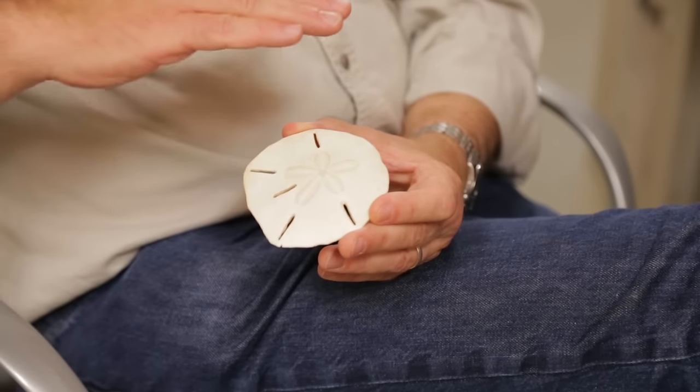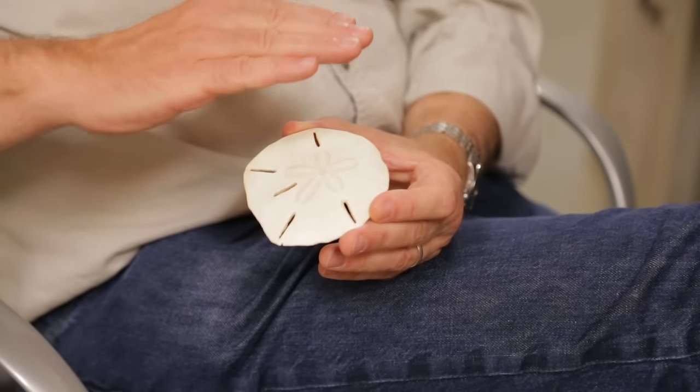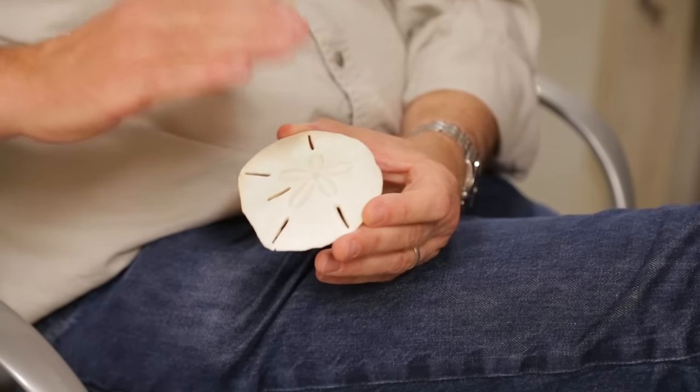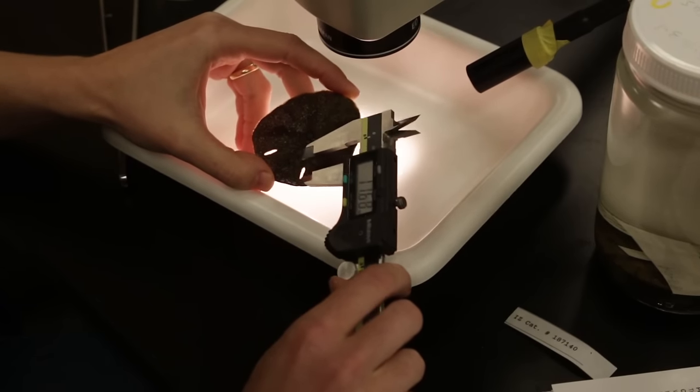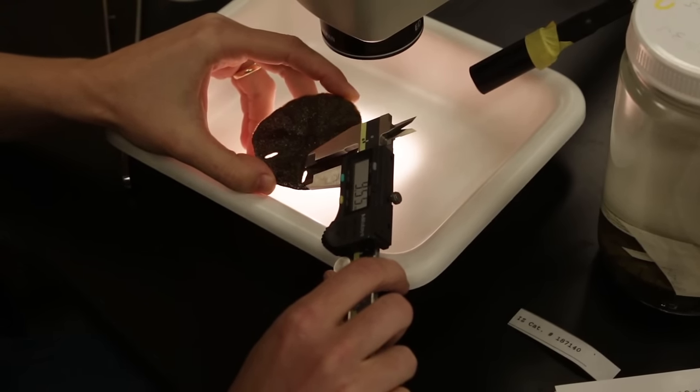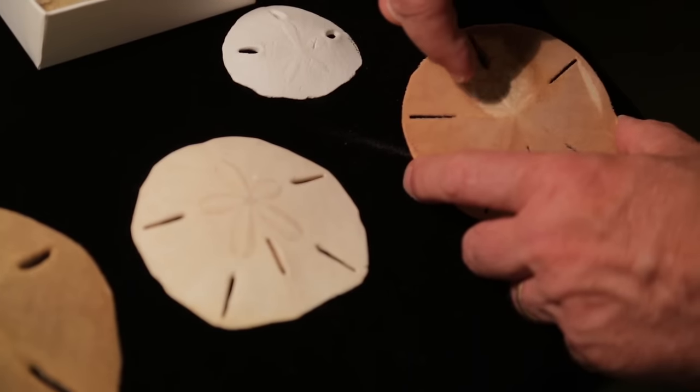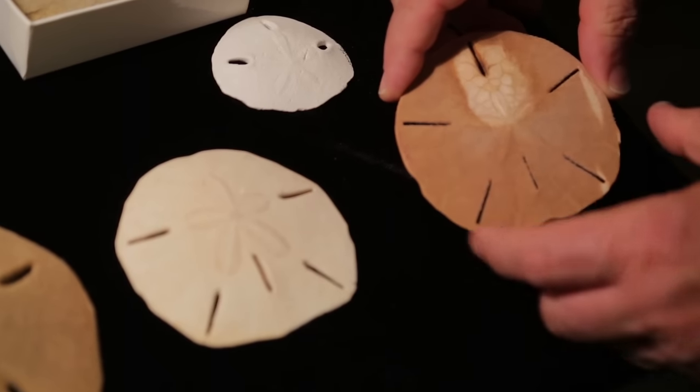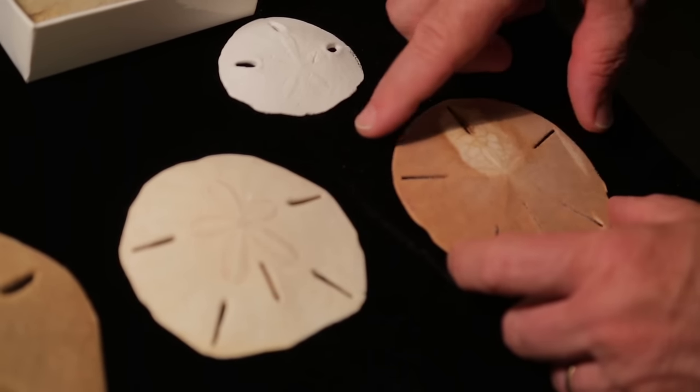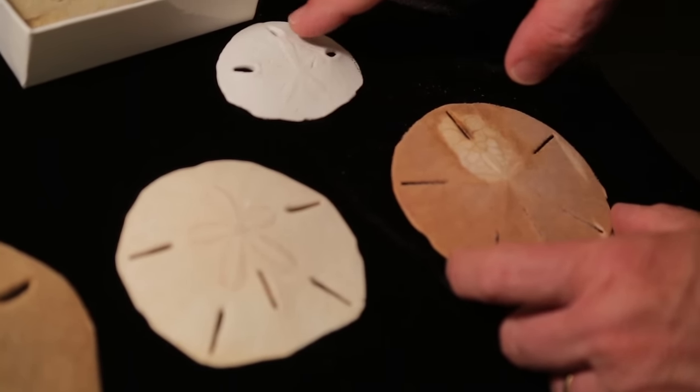So they have adapted to this environment by providing themselves with a variety of different ways of making that lift zero. So why not punch holes? If you punch holes through yourself, you're equalizing that pressure between the bottom and the top, and there's less tendency for the animal to blow away in the current.